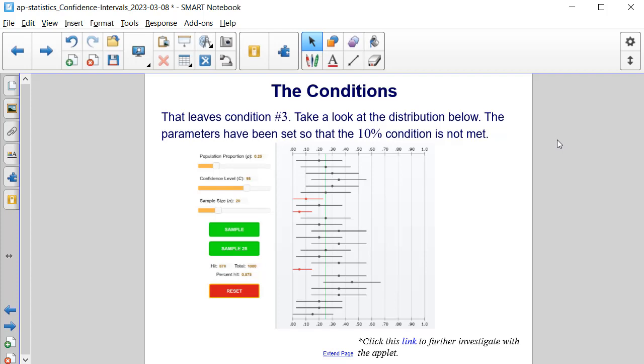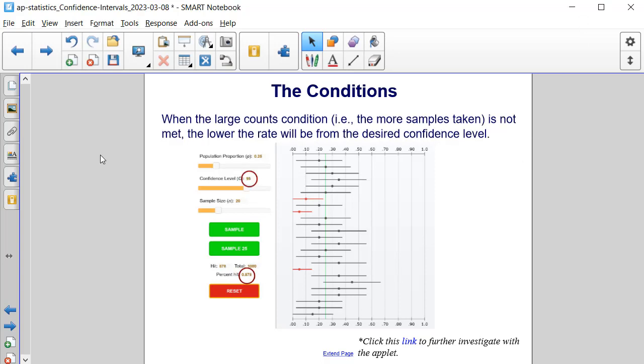That leaves condition number three. Take a look at the distribution below. The parameters have been set so that the large counts condition is not met. When the large counts condition is not met, the lower the rate will be from the desired confidence level.